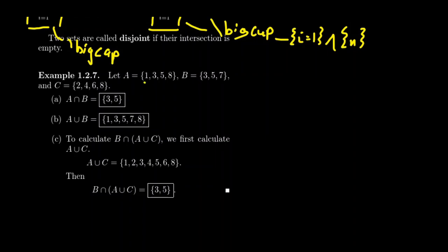Consider the following three sets: A is {1,3,5,8}, B is {3,5,7}, and C is {2,4,6,8}. The intersection of A and B: we're looking for elements that belong to both sets. 3 is in both, 5 belongs to both, but 8 and 7 don't belong to both. So the intersection is {3,5}.